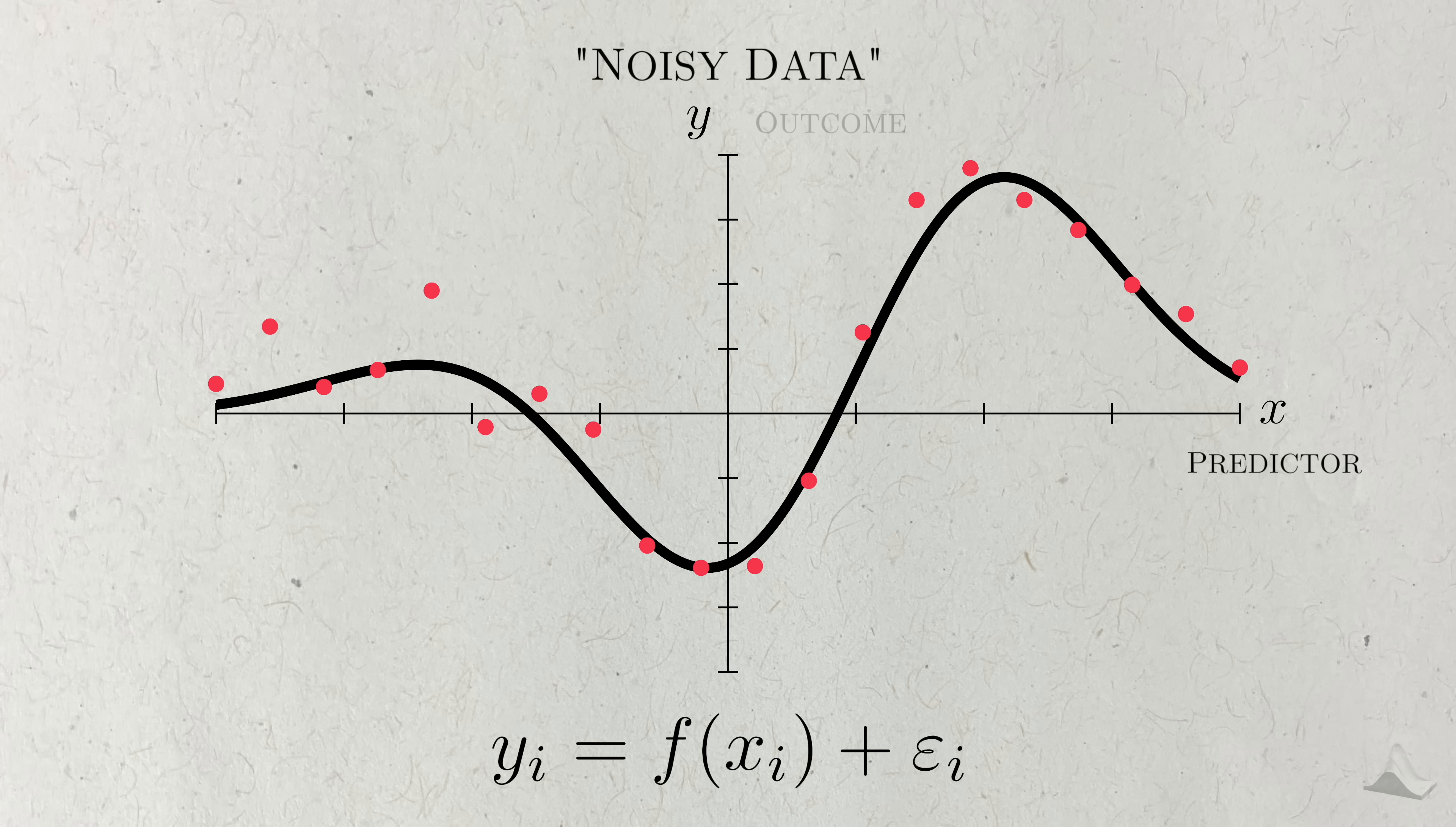We have some predictor x and some outcome y. For now I'm only going to consider the case for a scalar predictor and a scalar outcome. The relationship between x and y is denoted by a function f, which tells us how to take the value of the predictor and use it to predict the value of the outcome. But this relationship is polluted by noise, denoted by this epsilon term. This noise makes it so that we don't observe the exact value of the function evaluated at the predictor. Instead, we observe this outcome y, that is the sum of both the true relationship f(x) and this noise.